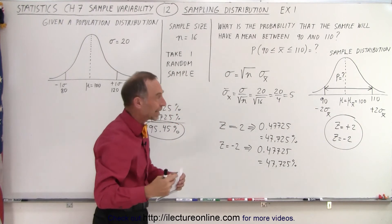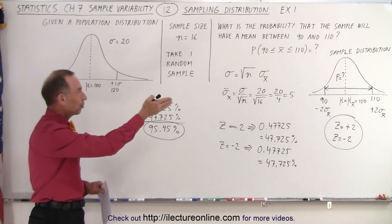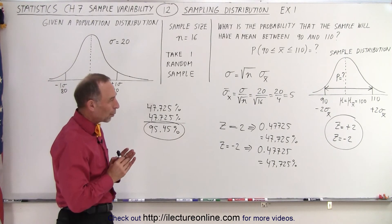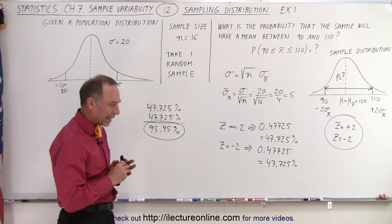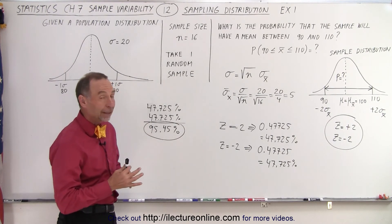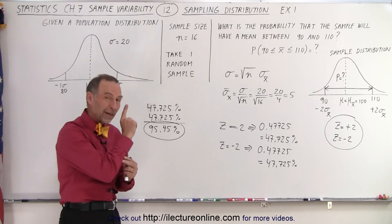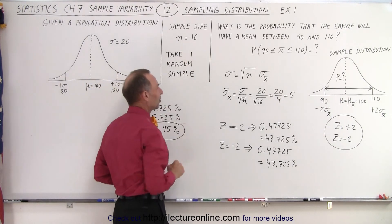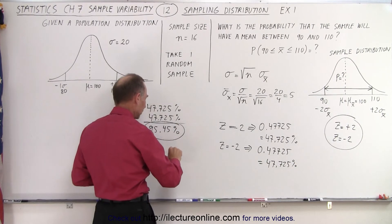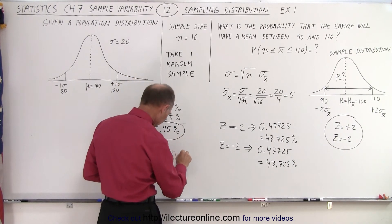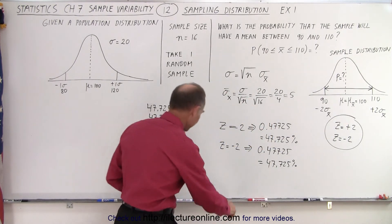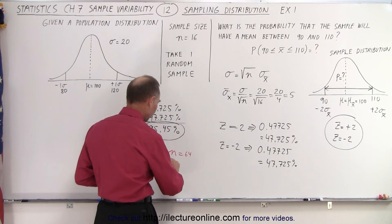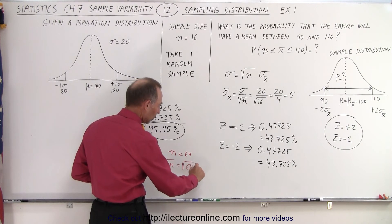That is how we deal with sample distributions and the probability that our one sample will fall within those limits. We might also ask: how can we get a sample size such that we have a higher probability of the sample mean being close to the population mean? That can be done by taking a larger sample size. Let's say we increase n to 64, because the square root of 64 equals 8.